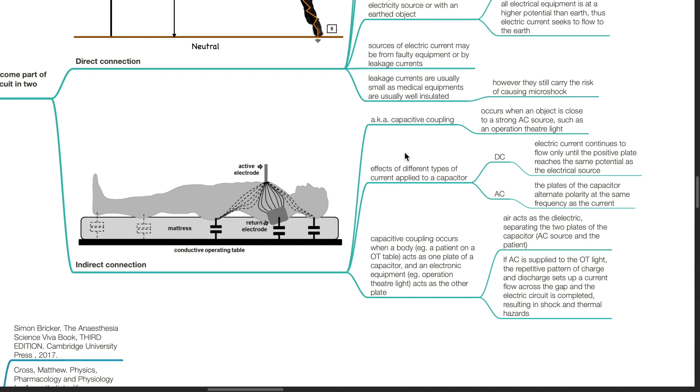Capacitive coupling occurs when a body, such as a patient on the OR table, acts as one plate of a capacitor and electrical equipment, such as an operation theater light, acts as the other plate. Air acts as the dielectric separating the two plates. If AC is applied to the OT light, the repetitive pattern of charge and discharge sets up a current flow across the gap and the electric circuit is completed, resulting in shock and thermal hazards.